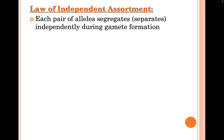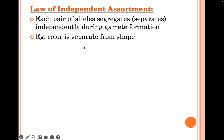The law of independent assortment tells us that each pair of alleles segregates independently during gamete formation, meaning they're all equally likely to end up in the offspring. It also means that color is separate from shape — if a pea plant has yellow seeds, that has no impact on what shape the seed will have. The traits and genes are all independent.